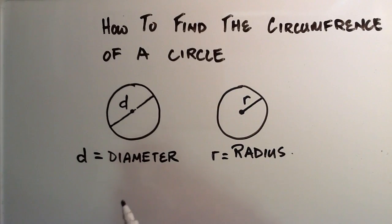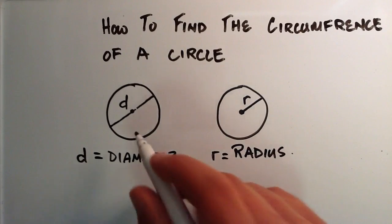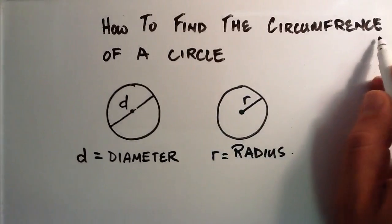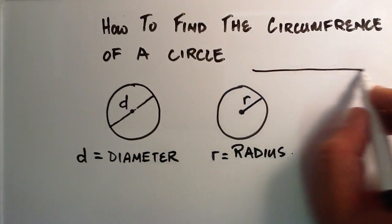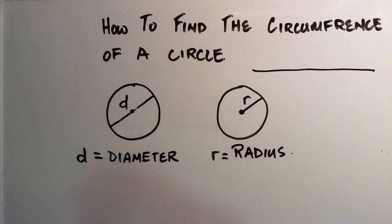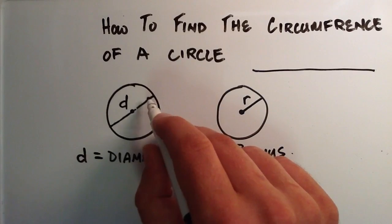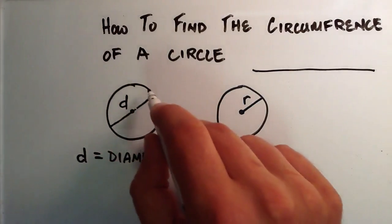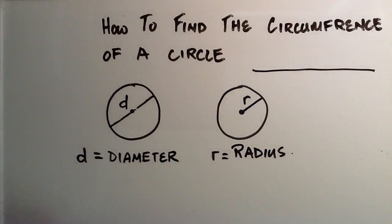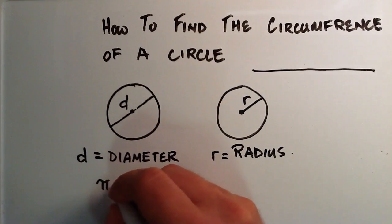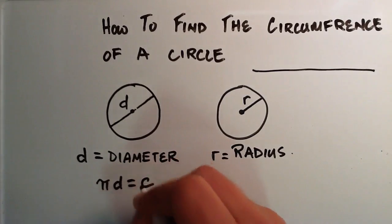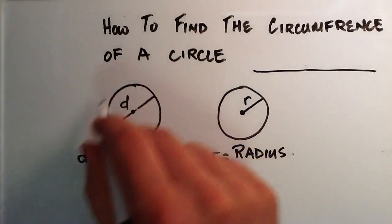We're going to use what we found out in my last video and apply it to the circle to find out what the circumference or the distance around the circle is. If you haven't seen my last video, you can go ahead and check it out here. Basically, my last video explains that the diameter of any circle can wrap around the outside, or the circumference, of the circle exactly pi times. So that implies that pi times the diameter is equal to the circumference, the distance around the outside.